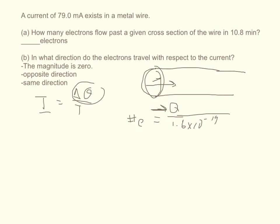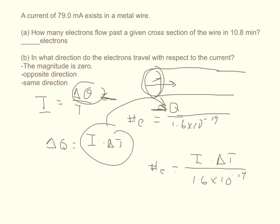But if over here we solve for Q, we get that delta Q is equal to I times delta T. So if we take the I times delta T and replace it for Q right here, we get that the number of electrons is equal to the current times the change of time divided by 1.6 times 10 to the negative 19th Coulombs.